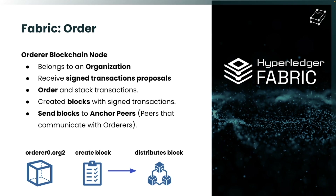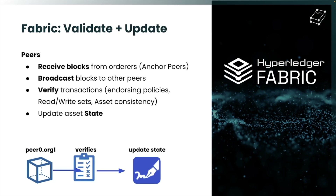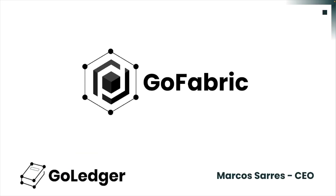After block creation, each block is sent to the anchor peers — the peers responsible for communicating with the orderer to receive newly created blocks for the validate and update phase. The anchor peers broadcast these blocks to other peers. Each peer then verifies every transaction inside the blocks: whether it satisfies the endorsing policy, checks asset consistency, timestamps, and stored values. If a transaction is satisfied, the state attached to it is updated; otherwise it is labeled as denied and no state change occurs inside the blockchain network.